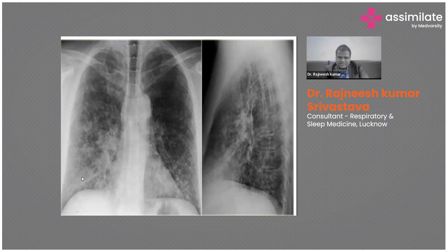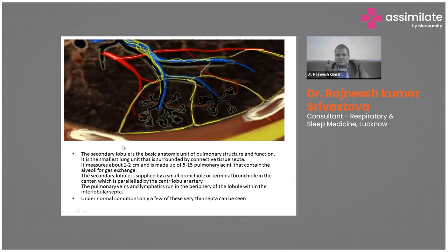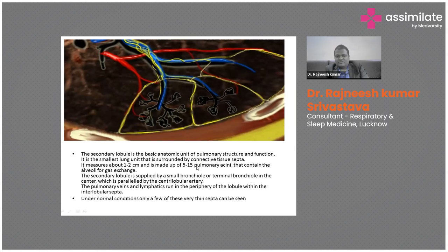Another pattern showing nodules with interstitial abnormalities was seen in a patient diagnosed with sarcoidosis. Now, to understand CT patterns of ILD, we must know the secondary pulmonary lobule, which is the basic anatomic unit of pulmonary structure and function. It contains about 5 to 15 acini and measures 1 to 2 centimeters.